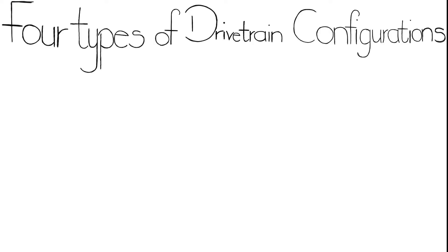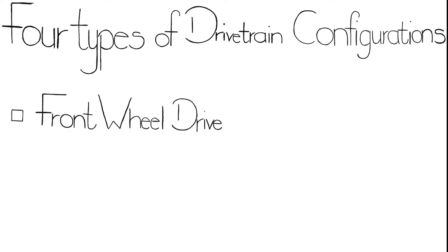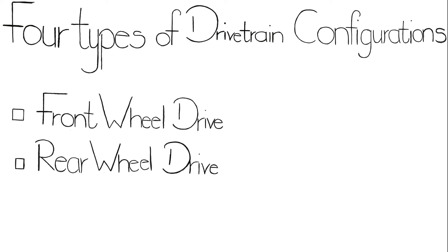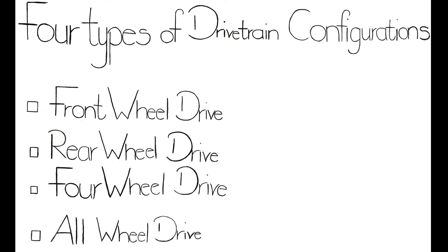There are four main types of drive train configurations in vehicles. These are front wheel drive, rear wheel drive, four wheel drive, and all wheel drive. In this video, we are going to learn in more detail about each one of these drive trains, its best applications, advantages as well as disadvantages.